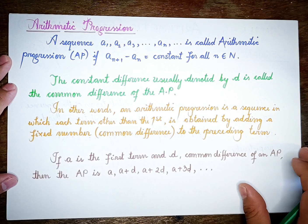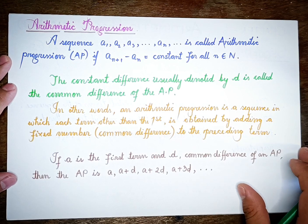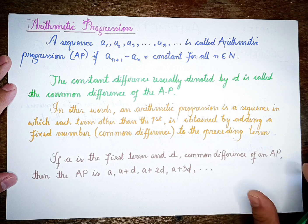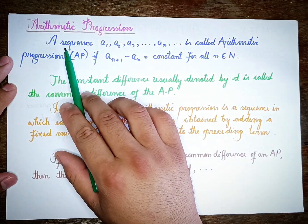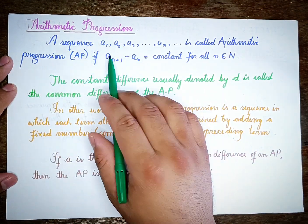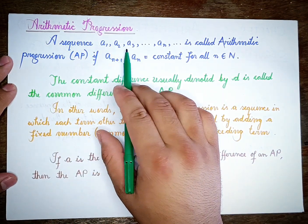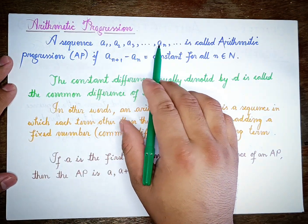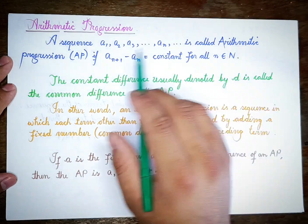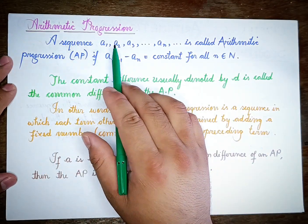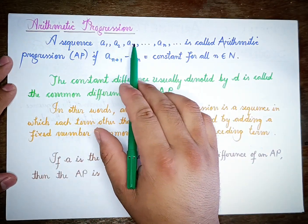Next topic, we are going to talk about arithmetic progression. Arithmetic progression is very good to know. A sequence A1, A2, A3, dot dot dot, A_N, dot dot dot is called arithmetic progression.